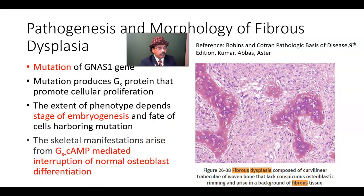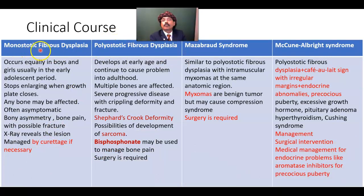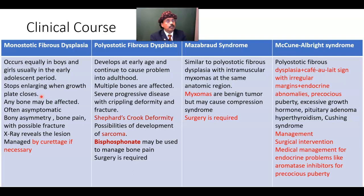This is the cancellous, spongy part of the bone. Regarding the clinical course, monostotic fibrous dysplasia occurs equally in boys and girls, usually in the early adolescent period. It stops enlarging when the growth plate closes, so the outcome is good — once the growth plate is closed, there will be no further progress of the fibrous dysplasia.